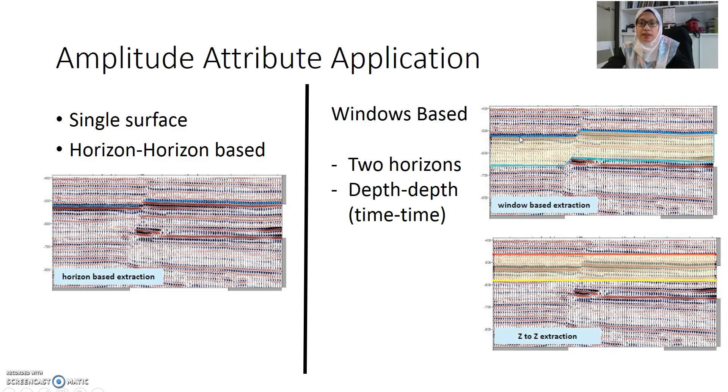We pick two horizons at the top and at the bottom. Then we can ask the software to calculate the values of amplitudes in between these two horizons. Apart from that, we can also use slices, time slices or depth slices, so that we can pick a time zone from 450 to 580, so we can see what are the values in between these two times.